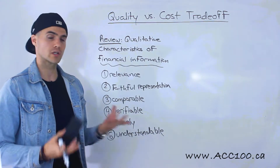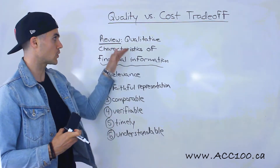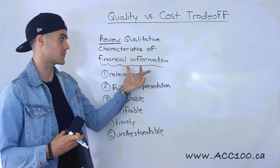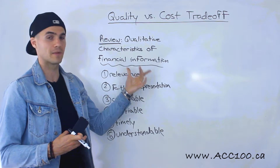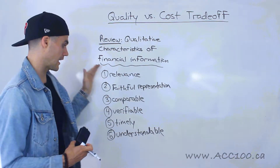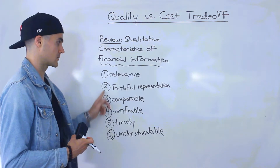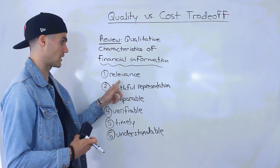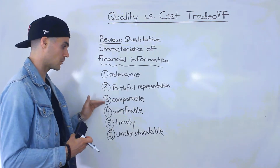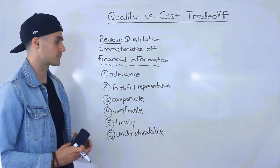To do a quick review, in the previous section we went over the qualitative characteristics of financial information — what makes that financial information have good quality. We went over the six characteristics: relevance, faithful representation, the information has to be comparable, verifiable, timely, and understandable.